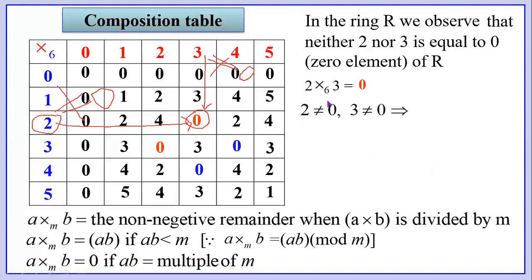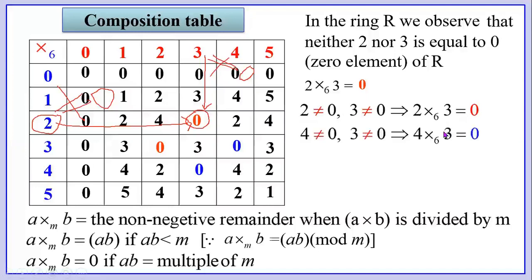That is: 2 is not equal to 0 and 3 is not equal to 0, yet 2 times 3 equals 0. So far we have learned that if two numbers are not equal to 0, their product must also be not equal to 0. But here the product of two non-zero elements equals 0. This is one of the wonders in mathematics, just as in modern algebra we have come across many such wonders.